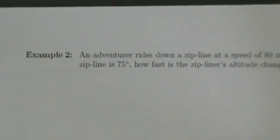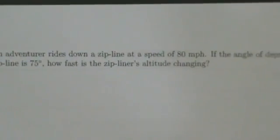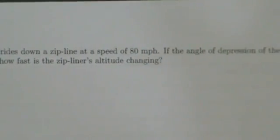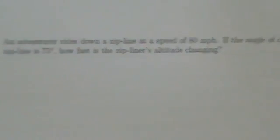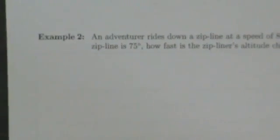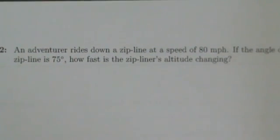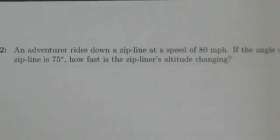So here's example two. An adventurer rides down a zipline at a speed of 80 miles per hour. If the angle of depression of the zipline is 75 degrees, how fast is the zipliner's altitude changing?